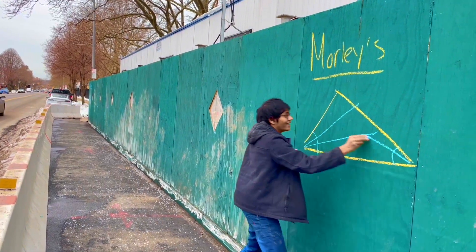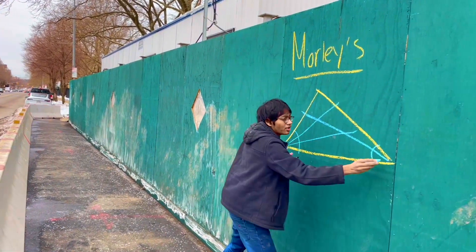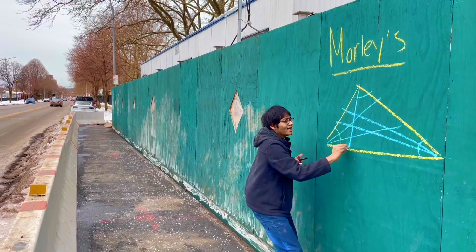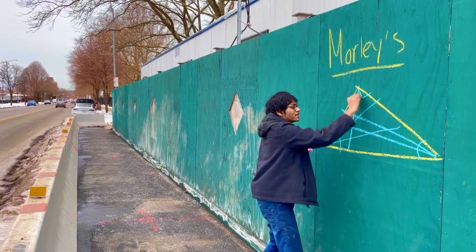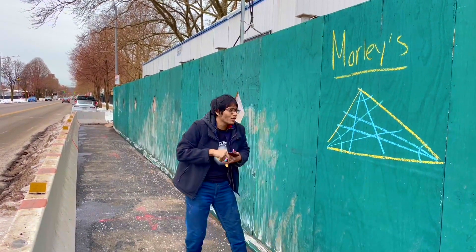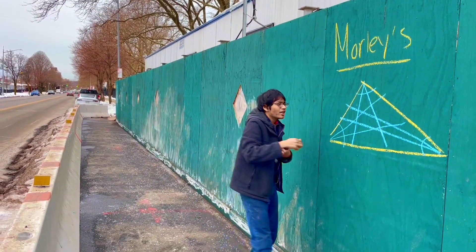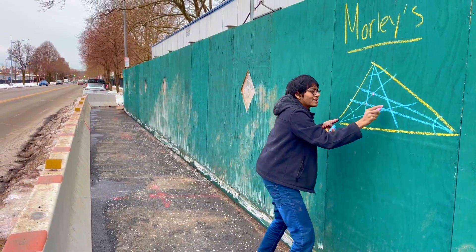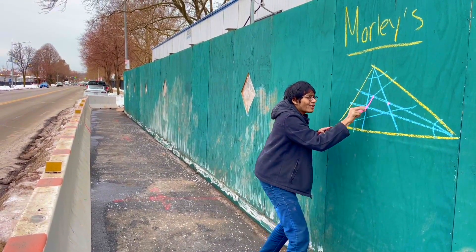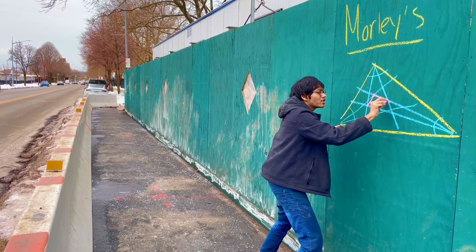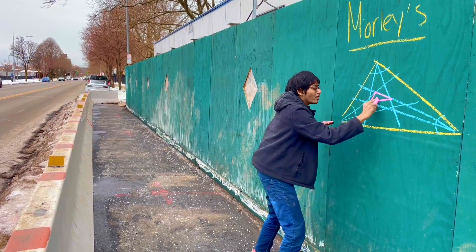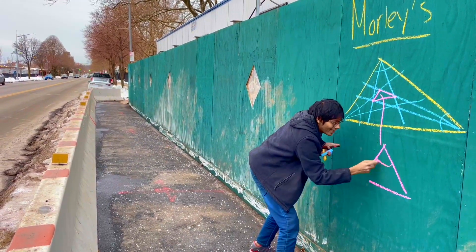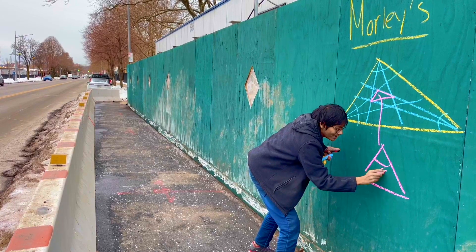Repeat with the second angle — cut it in thirds. Repeat with the third angle — cut it in thirds. And what are you left with in the center? You're left with an equilateral triangle. This right here in the center is an equilateral triangle, and that ladies and gentlemen is Morley's theorem.